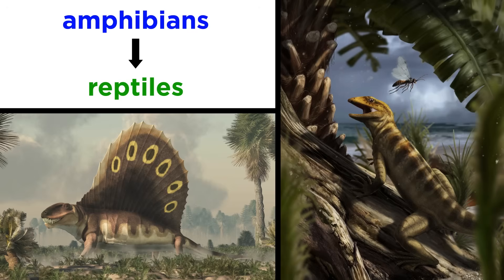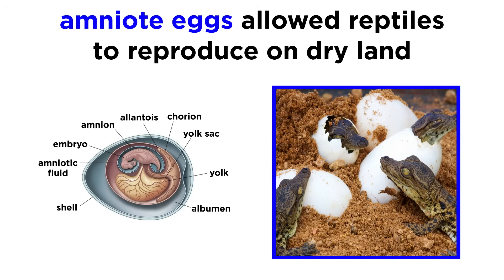Before long, the land was colonized by amphibians, which evolved into reptiles near the end of the Paleozoic. The main innovation that marks the evolution of amphibians to reptiles was the rise of the amniote egg. It allowed reptiles to reproduce on dry land, whereas amphibians must return to water for this part of their life cycle.